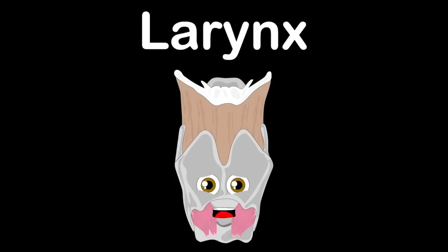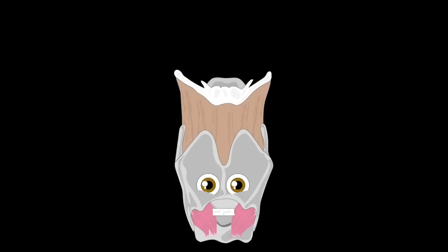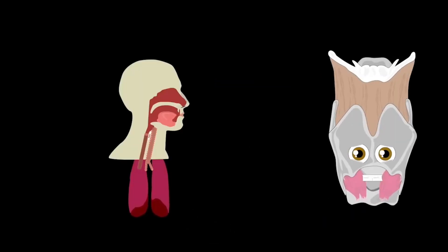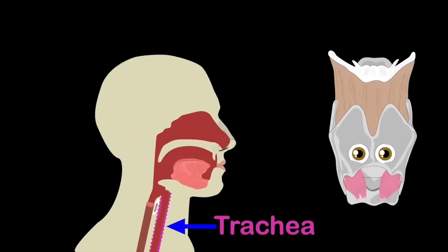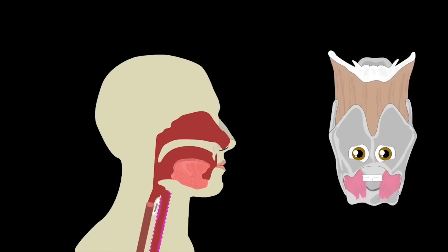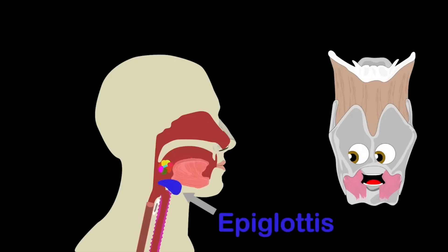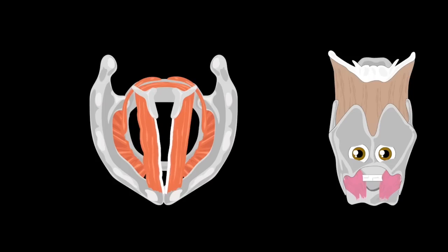I'm your larynx, I'm the reason you can talk and the reason you can sing. A hollow muscular organ — sit and learn, I'll do my thing. My main job's to help you breathe; I keep your trachea real clear from foreign matter down your throat, so don't you choke — that is my fear. When you're eating tasty food or drinking something really good, your epiglottis closes tight over your airway like a hood.